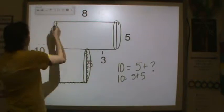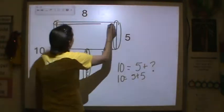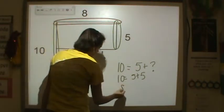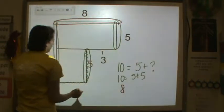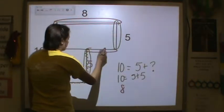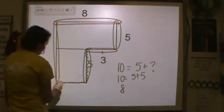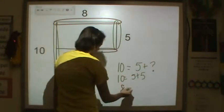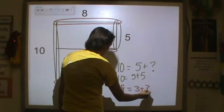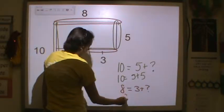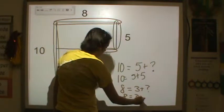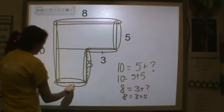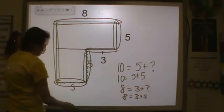Now let's look at the other missing length. I have 8 as my big long side, so the total length is equal to 3 plus this missing part right here. I know that 8 is equal to 3 plus 5, so this missing part is 5 as well.